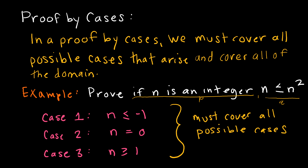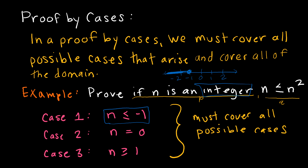I'm going to take a look at what happens when I have a negative value, which I'm saying n is less than or equal to negative 1. So let's think about a number line here for a minute — negative 2, negative 1, 0, 1, 2 — and notice that I'm using just integers. So if I say n is less than or equal to negative 1, that gives me negative 1 and any integer to the left of that on my number line. Case 2 says n is equal to 0, because 0 often reacts differently than other things. That takes care of 0.